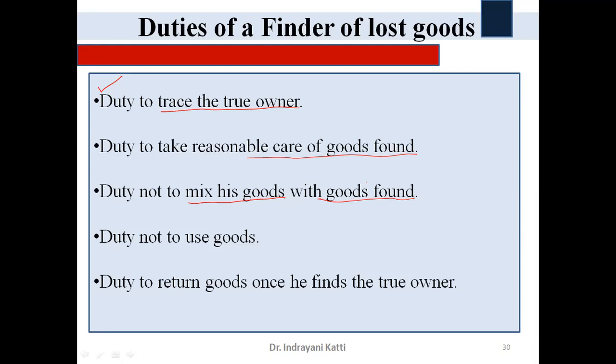The fourth duty is not to use the goods. The finder has no right to use the goods; he must keep them intact and untouched until the true owner is traced. The fifth and final duty is to return the goods. Once he traces the true owner, it is the duty of the finder to return the goods. These are all the duties imposed by law under the Indian Contract Act, 1872.